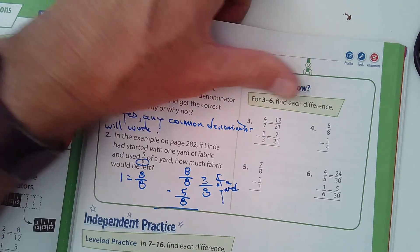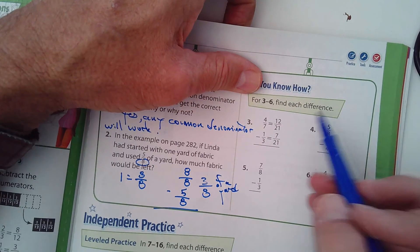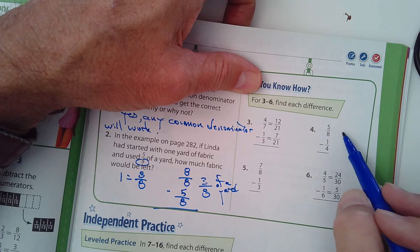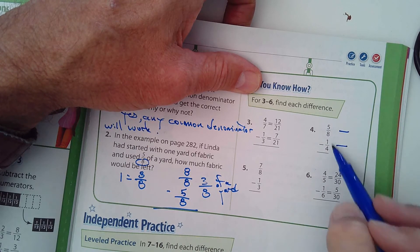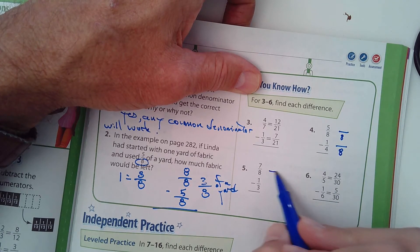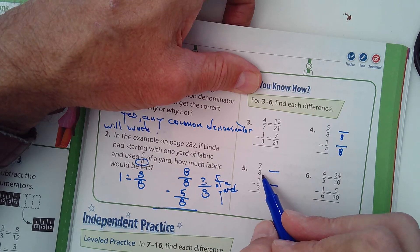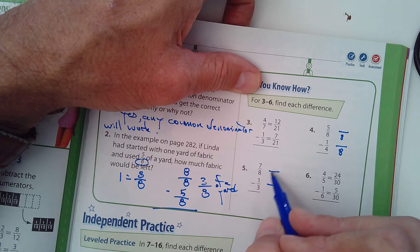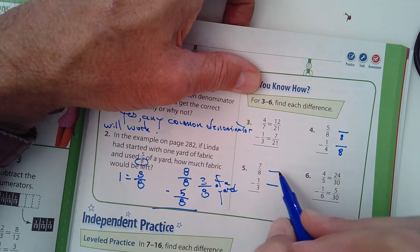Three through six, find each difference. You could do three. You guys could do these. What's the common denominator for this one here? It's going to be eight. What's going to be the common denominator for number five here? Well, start with the largest one. Three doesn't go into eight evenly, so double it. Does eight, eight plus eight is sixteen. Does three go into sixteen evenly? Nope.